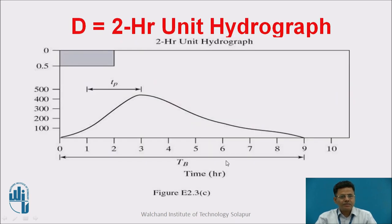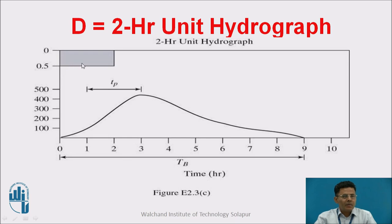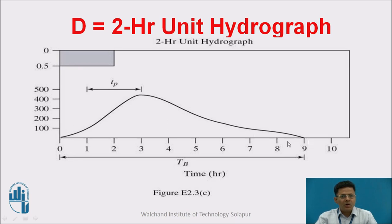An example will clarify this. Suppose D equals 2, meaning we have a 2-hour unit hydrograph. A 2-hour unit hydrograph represents the response when there is 1 centimeter of rainfall excess in 2 hours — that is, 0.5 centimeter per hour for 2 hours totaling 1 centimeter. The effect of that rainfall over a specific catchment produces a hydrograph with a base of say 9 hours.